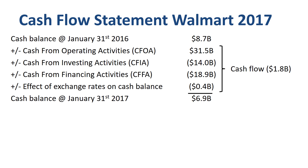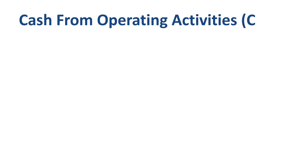Now we go one level deeper, discussing each cash flow category. Cash from operating activities is roughly the cash inflow from customers paying the company, minus the company paying suppliers, minus salaries paid to employees, and minus taxes paid to governments. For most mature companies in good health, cash flow from operating activities is a net cash inflow.